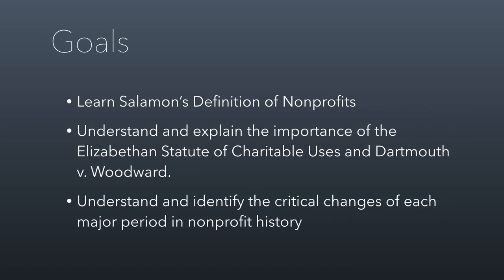At the beginning of each of these class sessions, I'm going to provide you with a list of goals — learning outcomes, essentially. I want you to hang on to them. You'll notice that they're also copied word for word into the study guide for when you prepare for exams. So the goals from this class session: I want you to learn and understand Lester Salamon's definition of nonprofit organizations — a more robust and thorough definition than the one I gave on the first day of class. I want you to understand and explain the importance of the Elizabethan Statute of Charitable Uses and a Supreme Court case called Dartmouth v. Woodward. And finally, I want you to be able to understand and identify the critical changes of each major period in nonprofit history as I define them.